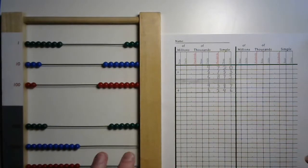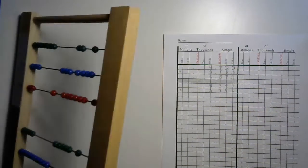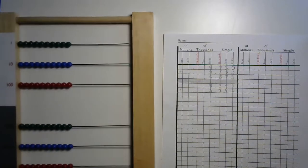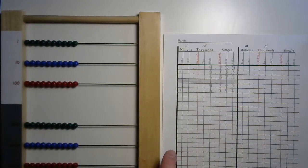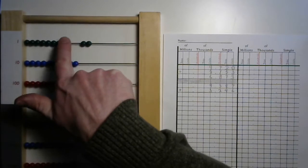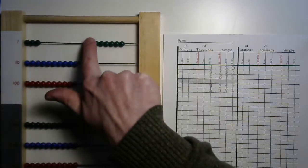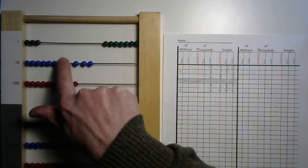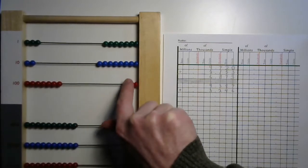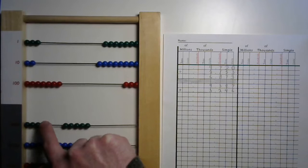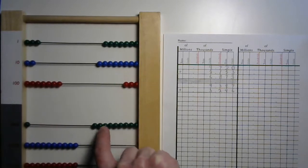So 9,387. I'm going to blank out my bead frame. Easy as tilting. And now I've got to set up 9,387. So here is one, two, three, four, five, six, seven units. One, two, three, four, five, six, seven, eight tens or 80. One, two, three hundreds. And one, two, three, four, five, six, seven, eight, nine thousand.